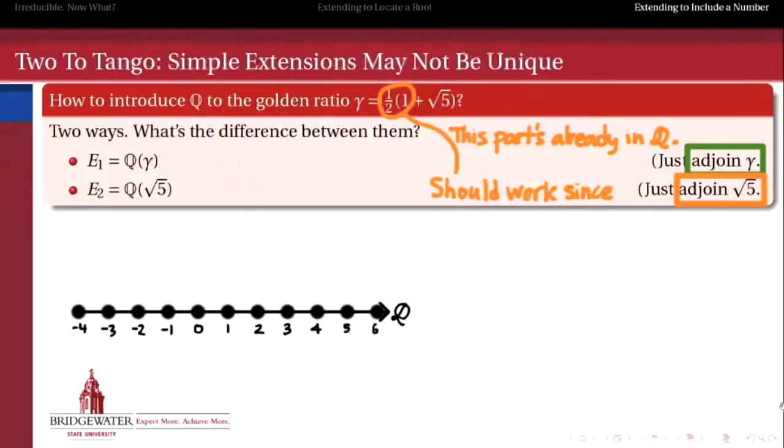So first, let's think of this metaphor of an extension field being like a vector space over Q, once again. So here are the rational numbers. I've listed a few of them, but of course, all of the infinitely many non-integers in between are also a part.